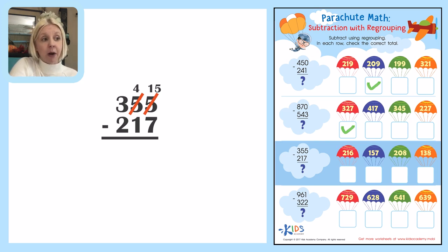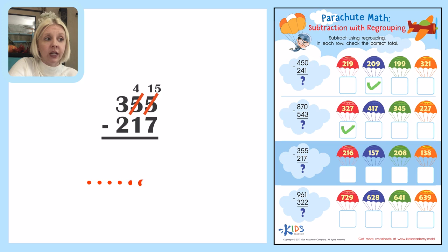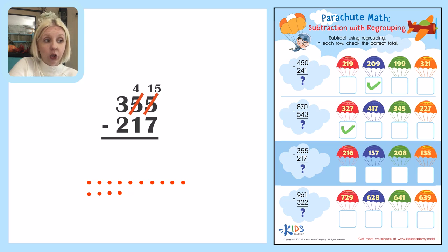Now I need to take fifteen minus seven. That's a big number, so I'm going to draw fifteen dots to make sure I get it correct. I'll draw fifteen dots and then take away seven. Counting the remaining dots gives me eight. So the answer in the ones place is eight.